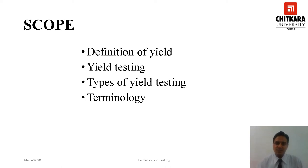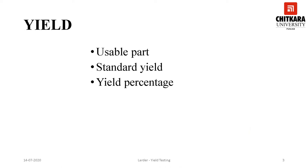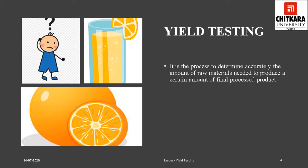Yield is the amount of food material that is available for consumption after the food is prepared, processed, and turned into a final product. A standard yield is the yield obtained when an item is processed as per the particular standard methods of preparation, cooking, and portioning of an establishment. Yield percentage is defined as the percentage of the whole purchased unit of an item that is available for portioning after any required processing has been completed. This percentage is calculated by dividing the weight obtained by the original weight of the item before processing.